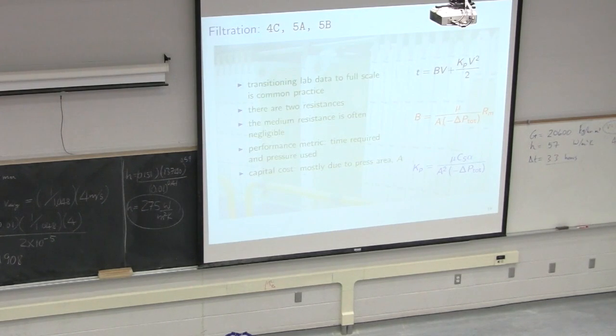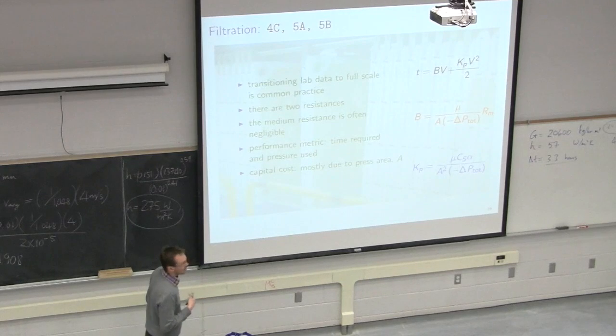Filtration was our next topic. We looked at again lab based filtrations that are then used to scale up to a larger scale. So in the lab we can then calculate this coefficient B, the medium's resistance. We look at that term, RM is the medium's resistance and the term KP is the resistance due to the cake.